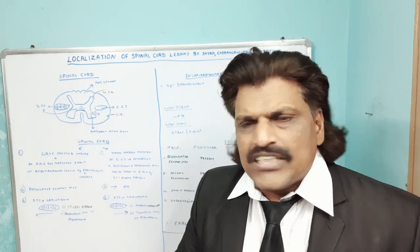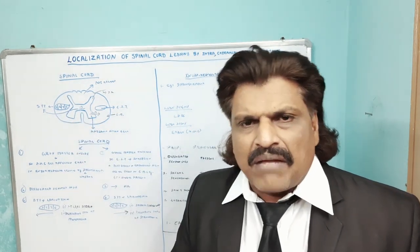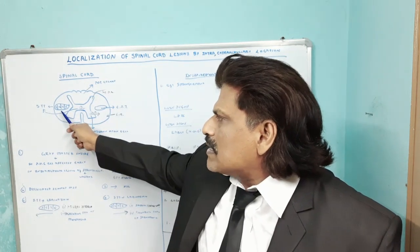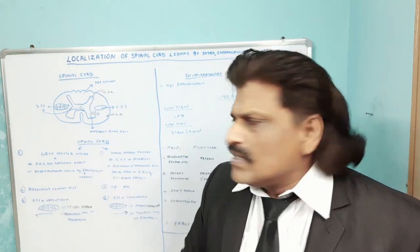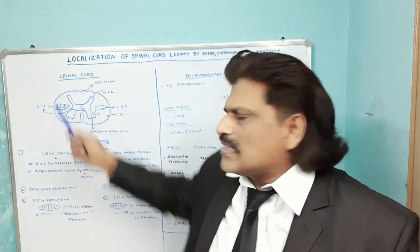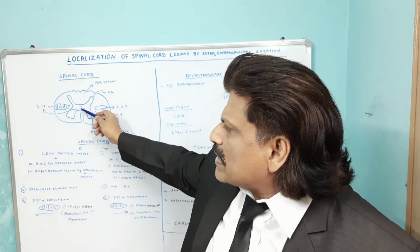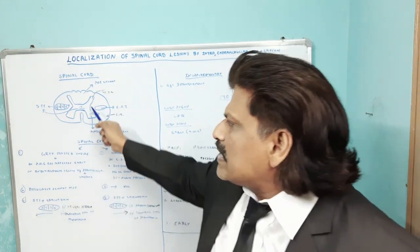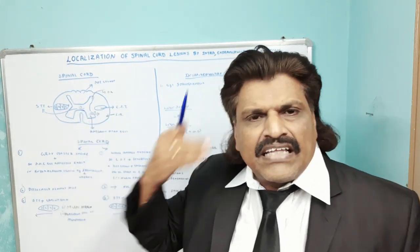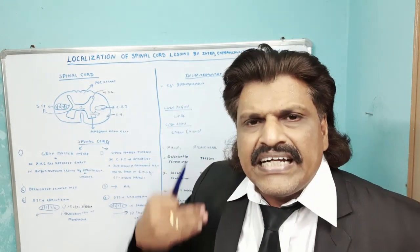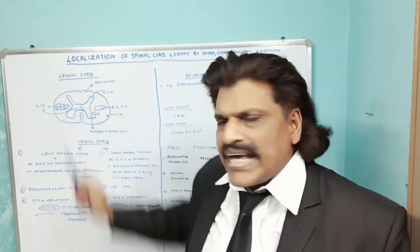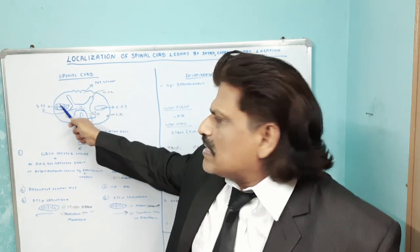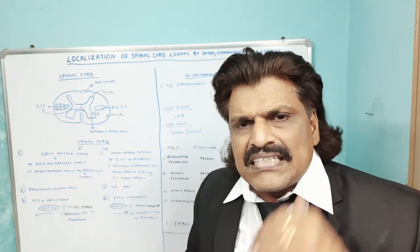The third important concept is the arrangement of fibers in the spinothalamic tract — what we call lamination. The outermost fibers are sacral, followed by lumbar, then thoracic, and the most medial are cervical. So an intramedullary lesion, starting within the gray matter and expanding outward, hits cervical fibers first, then thoracic, then lumbar, and lastly sacral. Therefore there is sacral sparing in intramedullary lesions, and the sensory loss is of a descending type: cervical, thoracic, lumbar, then sacral.